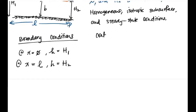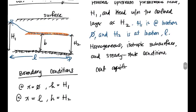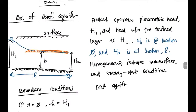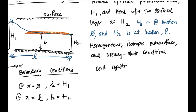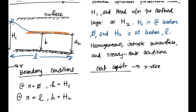For a confined aquifer, I'll write it in 2D and start crossing off terms. Clearly we don't have any flow in the Y direction — we're just looking at flow in the X direction. So we want only the X-direction flow term.